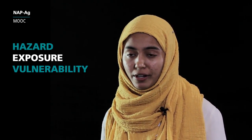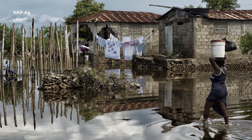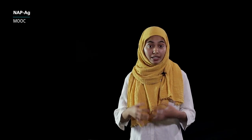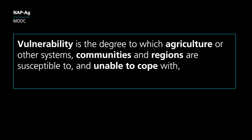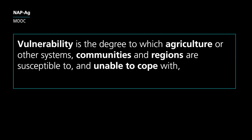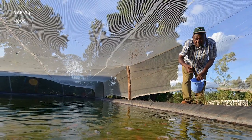Hazard is, say, a weather event — a snow blizzard or a flood. Exposure is the system that is exposed to it or can be affected by it; in our discussion, the agriculture system. Vulnerability of the agriculture system is then determined by the degree to which agriculture is susceptible to and unable to cope with the adverse effects of climate change. Most of the time, it is the world's poorest people and countries that are most vulnerable. Many of the poorest are smallholder producers, such as farmers, herders, fishers, and forest-dependent communities.